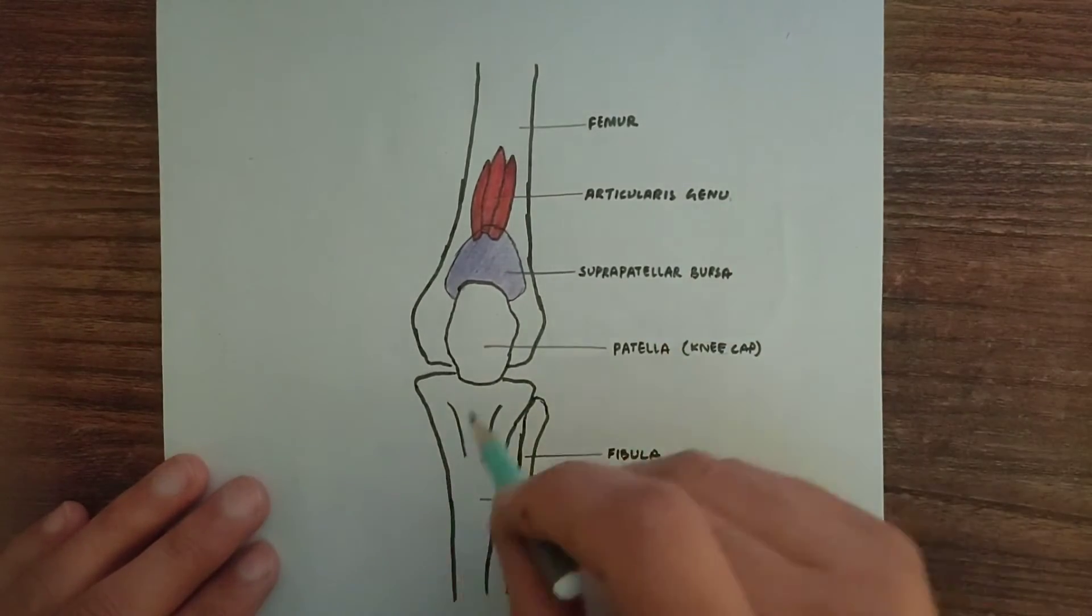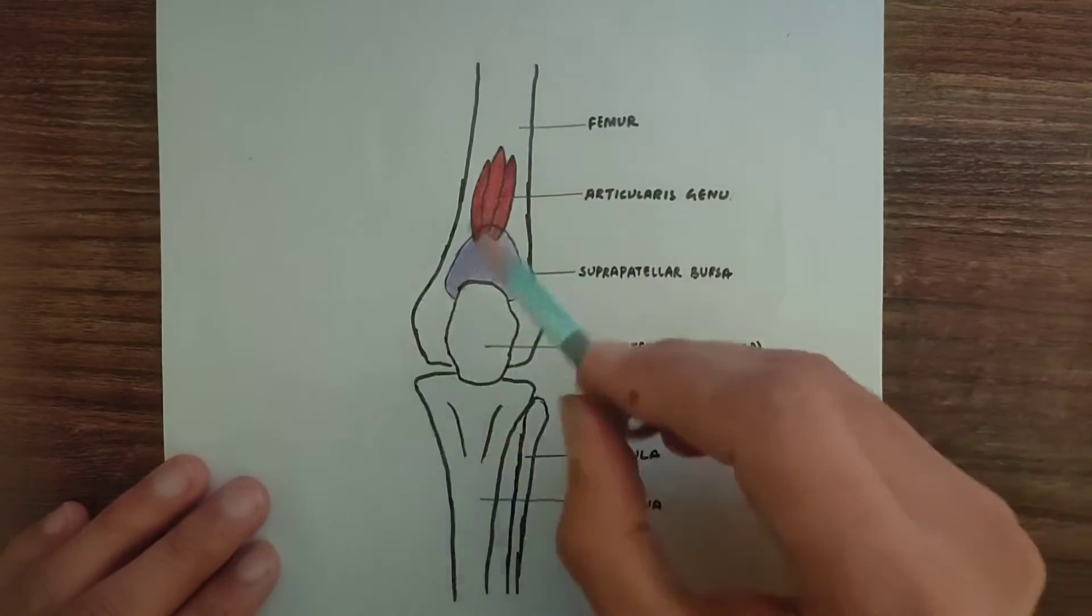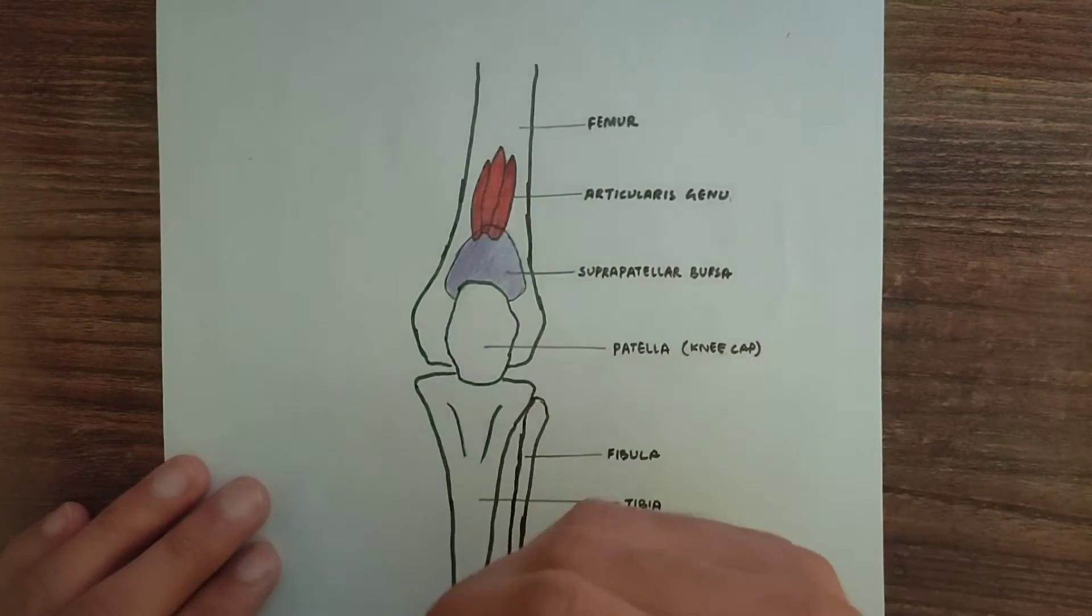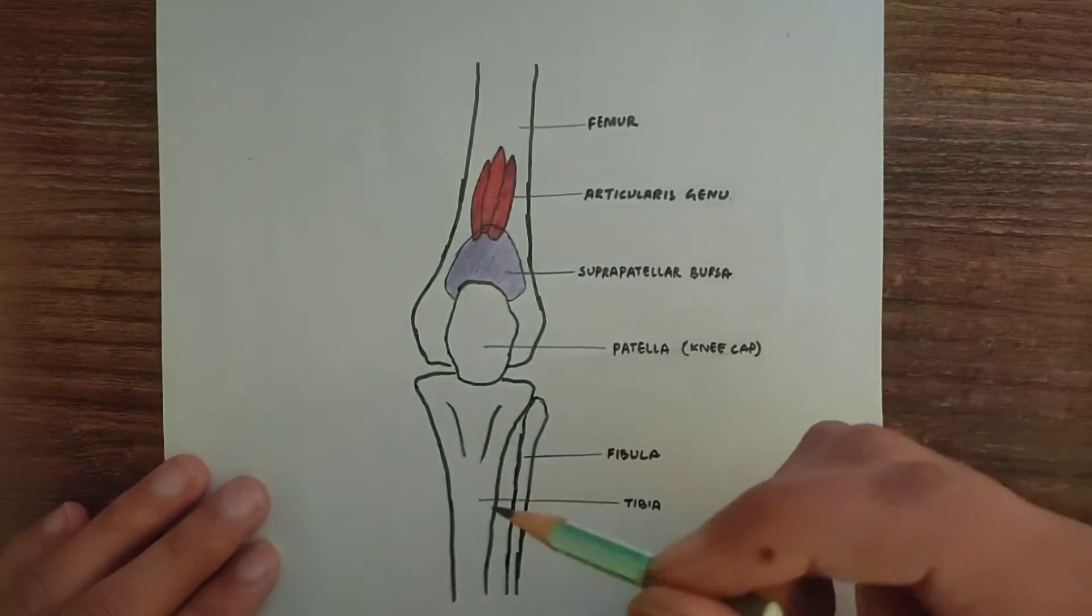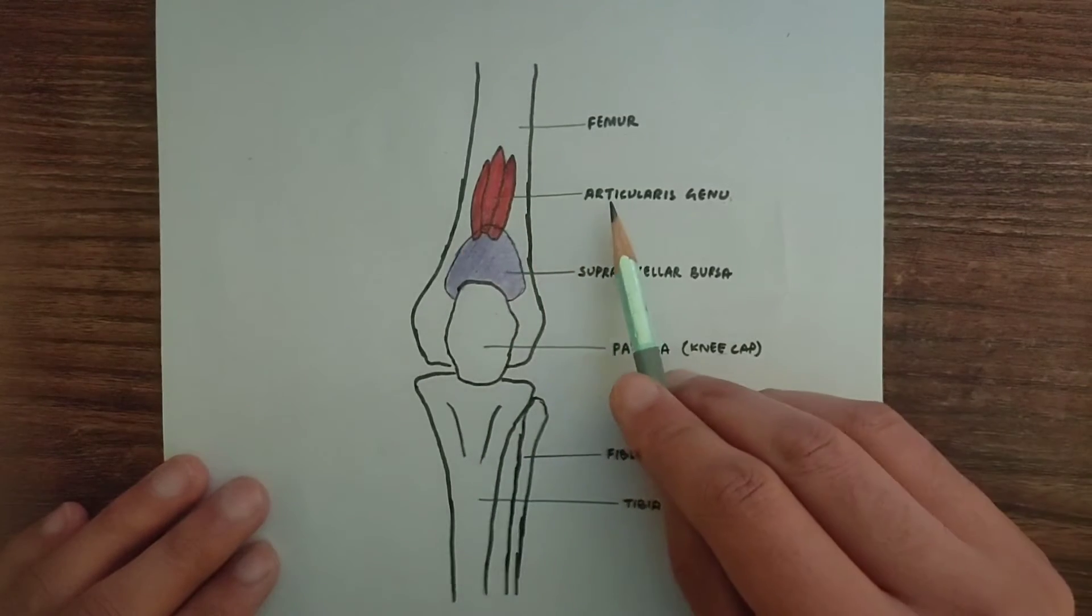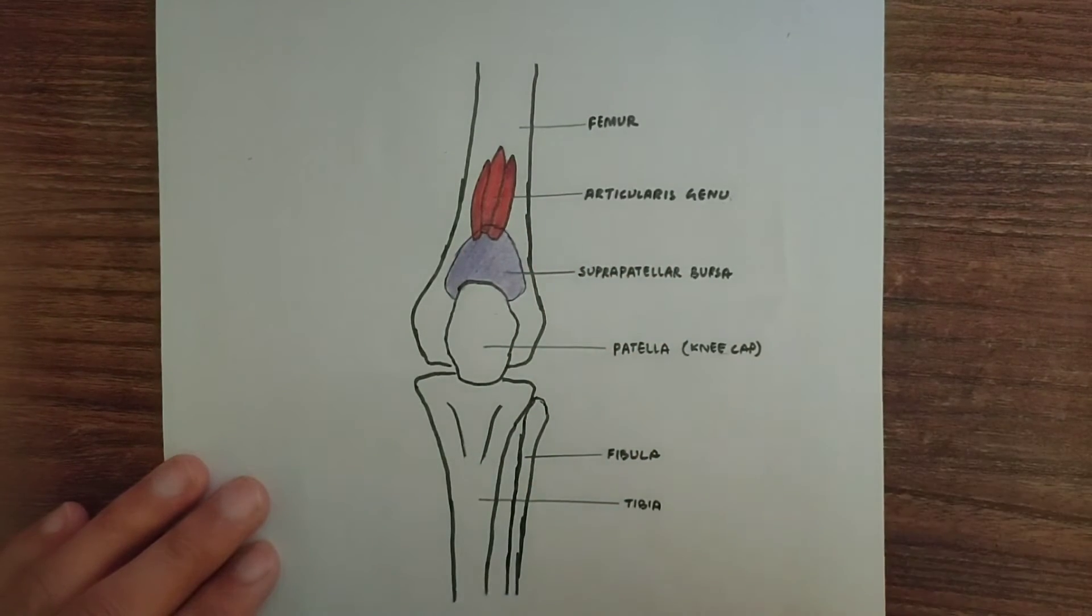Now as you can see in this diagram, Articularis genu muscle comprises of three muscular slips. Sometimes it may be four also, and these muscular slips form the Articularis genu muscle.